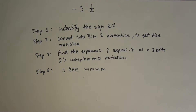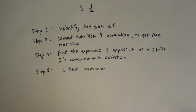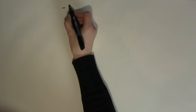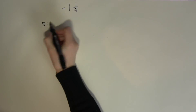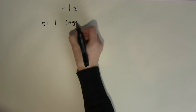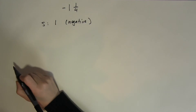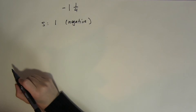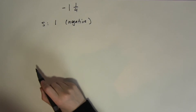This sounds quite long and probably a little alien in theory, but let's go through a couple of simple examples. Let's look at minus 1 and a quarter. The sign bit is going to be 1 because this is a negative number. Now we are going to find the mantissa. For that, first we need to convert 1 and a quarter into binary.